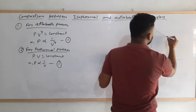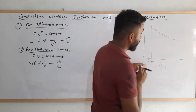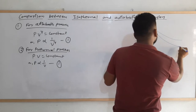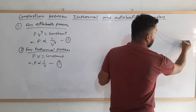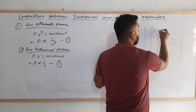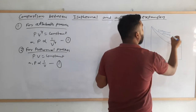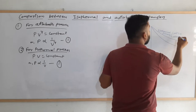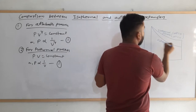The pressure-volume curve for the isothermal process shows that as volume increases, pressure decreases. On the other hand, the pressure-volume curve for the adiabatic process is steeper than the isothermal one. For the isothermal process, the change in internal energy is zero and the change in temperature is also zero.